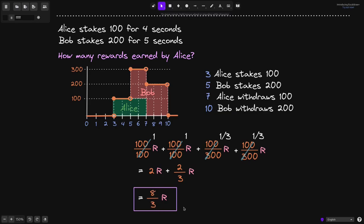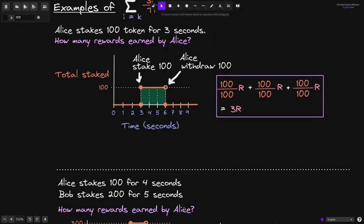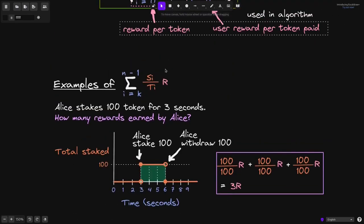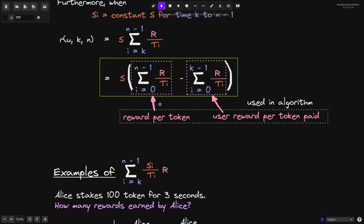Those are two examples of calculating the amount of rewards earned by a user using this equation. In the next video, we'll go over another example of calculating rewards earned by a user using this equation.